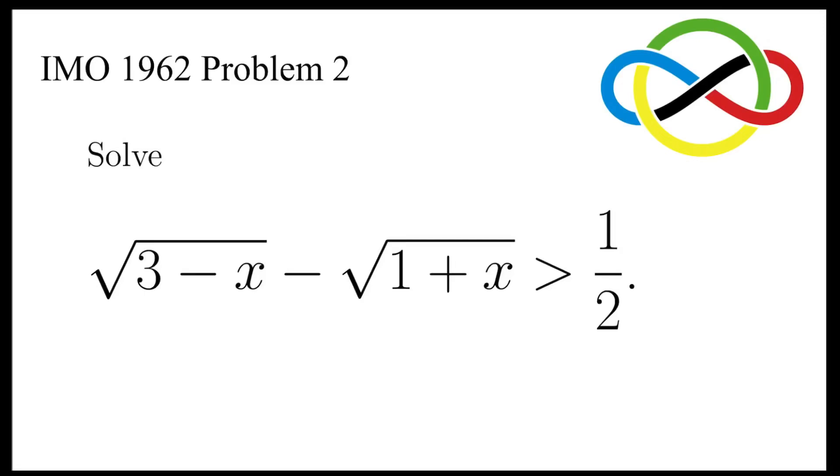In this video, we are going to solve the second problem in IMO 1962. Square root of 3 minus x minus the square root of 1 plus x is greater than a half.